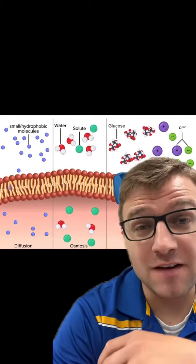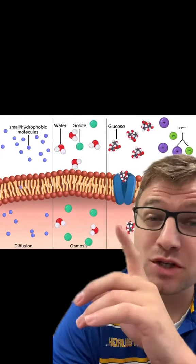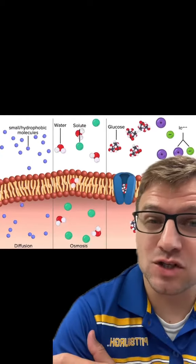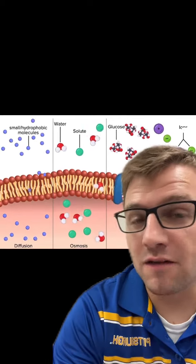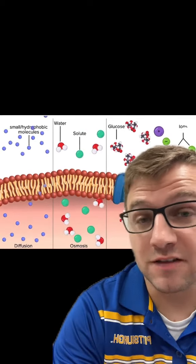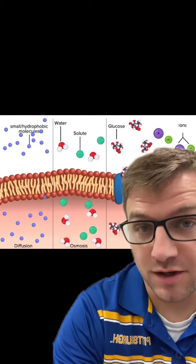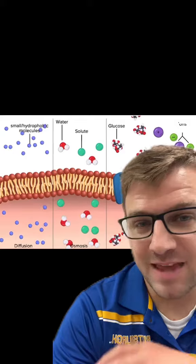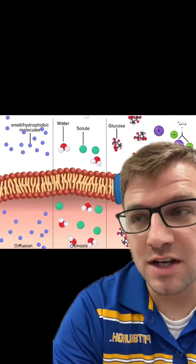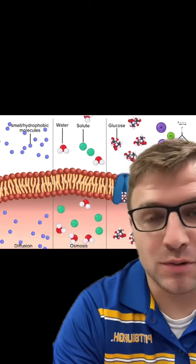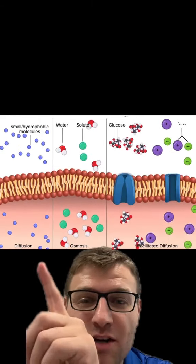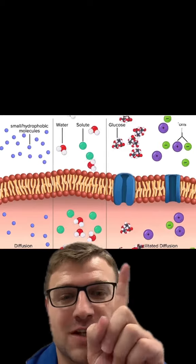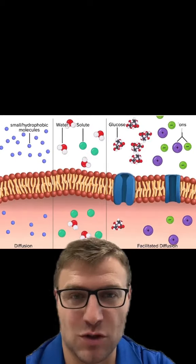Let's go over the three different types of passive transport using this animation. Passive transport is the movement of molecules from areas of high to low concentration, and this is usually done without the input of energy. The three different types are diffusion, osmosis, and facilitated diffusion.